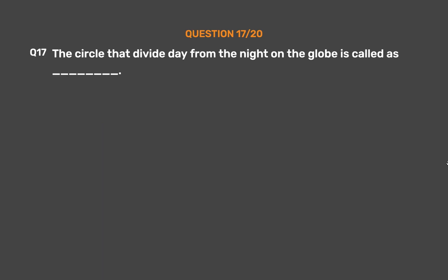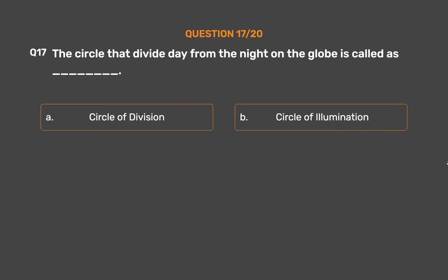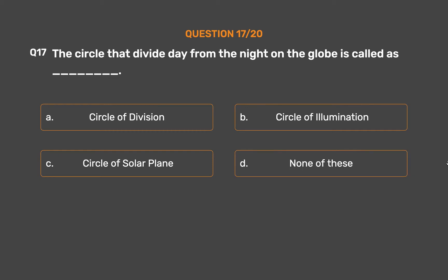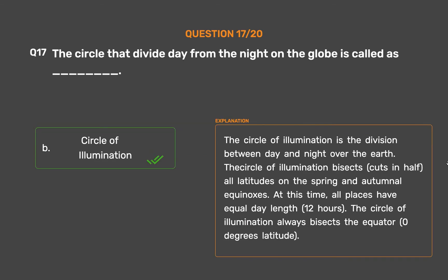Question number 17. The circle that divides day from night on the globe is called underscore. Option A: Circle of division. Option B: Circle of illumination. Option C: Circle of solar plane. Option D: None of these. The correct answer is Option B: Circle of illumination. The circle of illumination is the division between day and night over the Earth. It bisects all latitudes on the spring and autumnal equinoxes, giving all places 12 hours of daylight. The circle of illumination always bisects the equator at 0 degrees latitude.